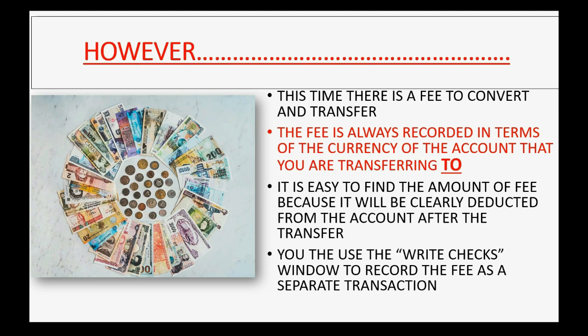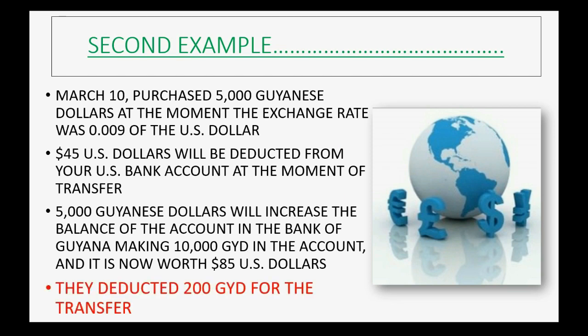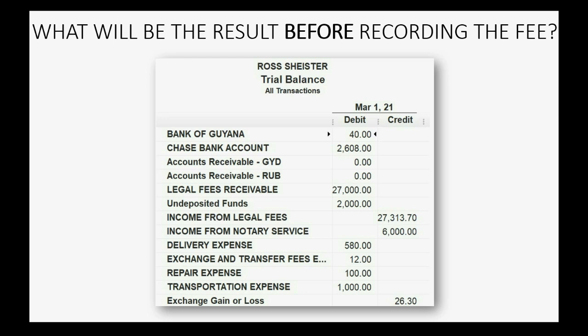You will use the Write Checks window to record the fee as a separate transaction. In this situation, they deducted 200 Guiana dollars for the transfer. Before recording the fee, Bank of Guiana goes up to $85 and Chase bank goes down to $2,563, which is the equivalent of $45 U.S. going from Chase to Guiana.